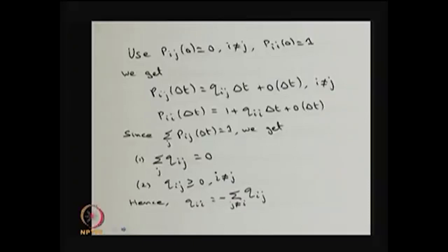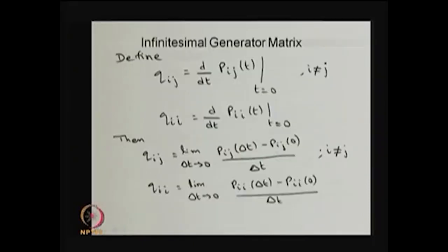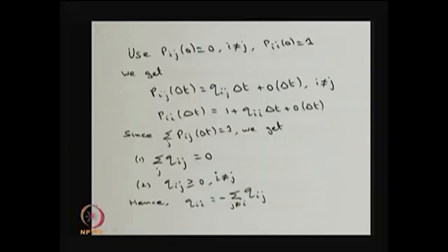Substituting p_ij(0) equal to 0 into the limit expression as delta t tends to 0, we get that p_ij(delta t) equals q_ij times delta t plus a small o-order term of delta t, meaning the o-order term tends to 0 as delta t tends to 0.